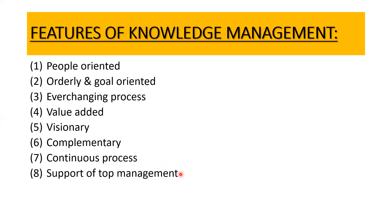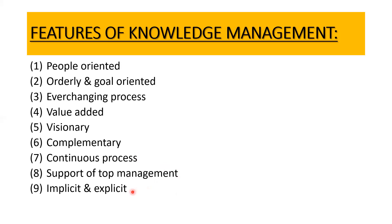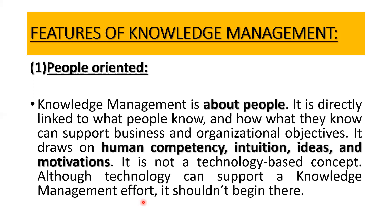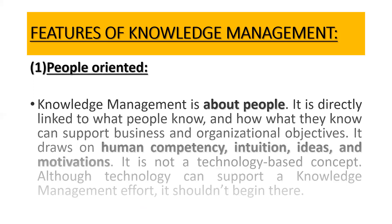Knowledge management requires the support of top management and mainly comprises two types: implicit and explicit knowledge. We have talked about both forms in detail. Lastly, the management of knowledge is also a systematic process. We have discussed all of these features in detail.